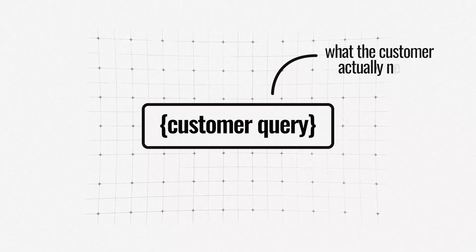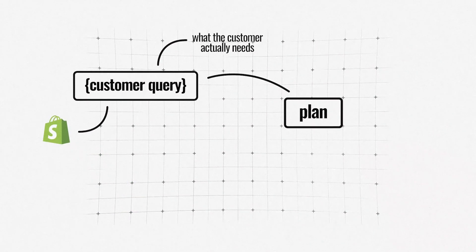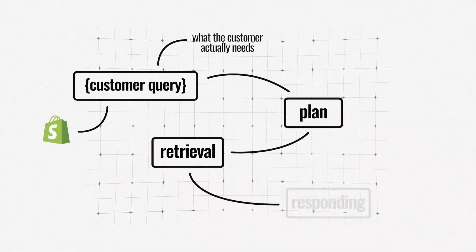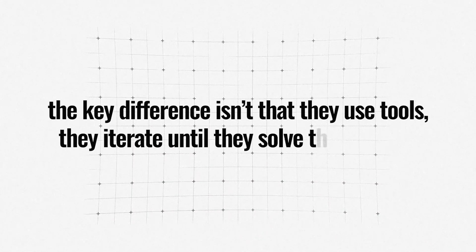We've gone from having a customer support bot that could only pull info from Shopify because we told it to, whereas this agent instead has the ability to take a more vague query like 'help this customer out.' It can work out from the customer query what the customer actually needs, pull information around their order, plan out the next steps to retrieve that information, and respond to the customer with the appropriate information. It's a more holistic way of approaching a problem, augmenting the traditionally human part of the process. The key difference isn't that they use tools — it's that they iterate until they solve the problem.